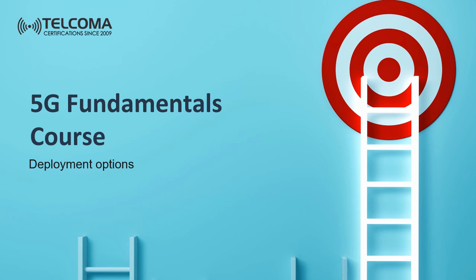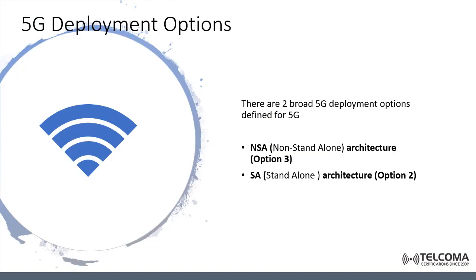The three main deployment options are option one, two, and three. Option one relies on existing LTE EPC architecture. Option two is the target architecture with a standalone new radio and 5G core. Option three is called dual connectivity, and it is the best short-term alternative for 5G deployment because it relies on existing LTE and EPC when connecting the new radio. The different deployments are based on either expanding the 4G network to use some 5G features, or building a fully new 5G network.